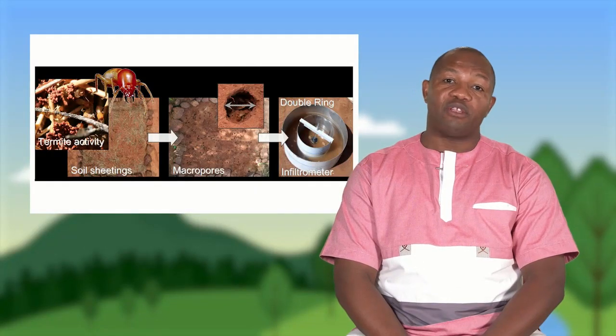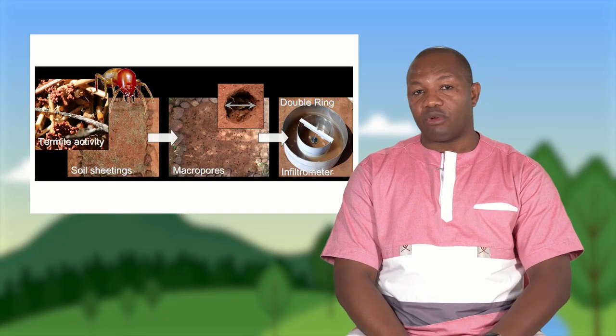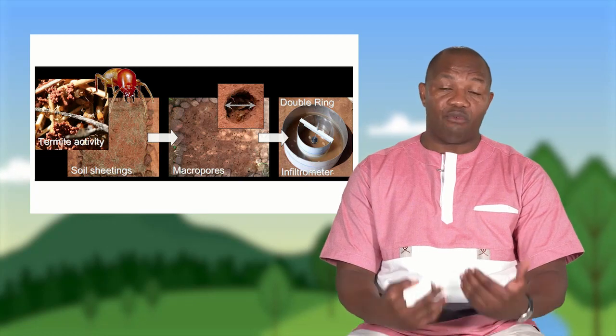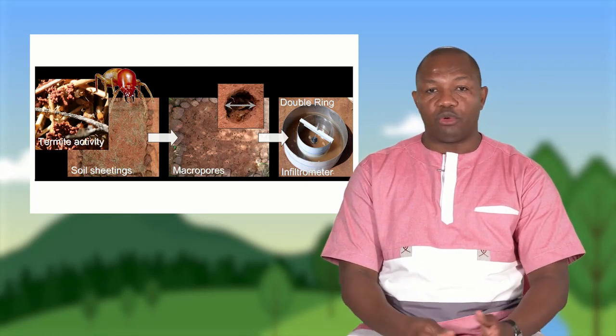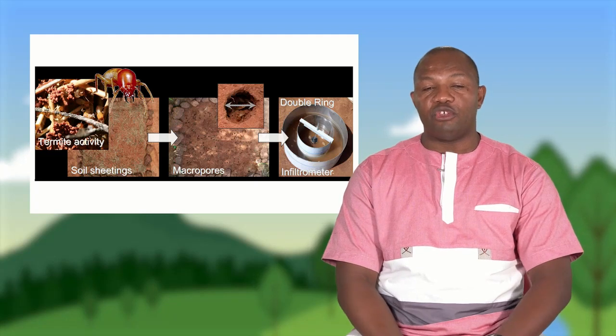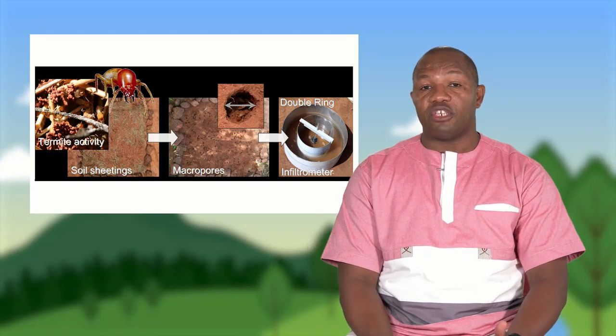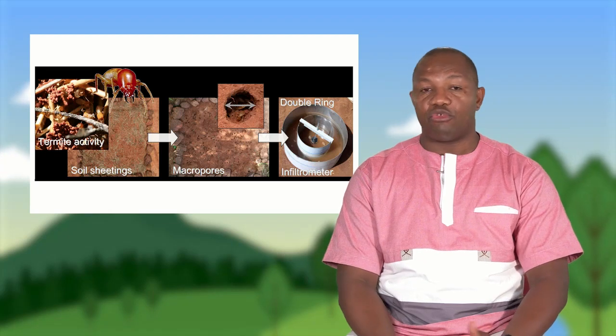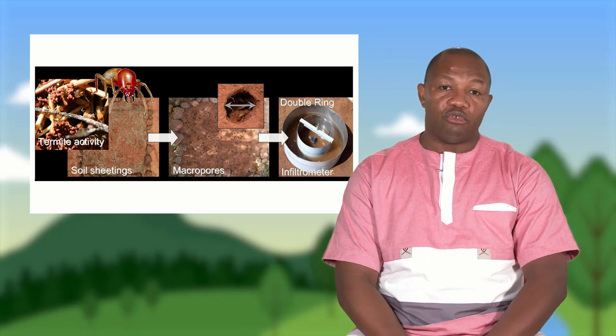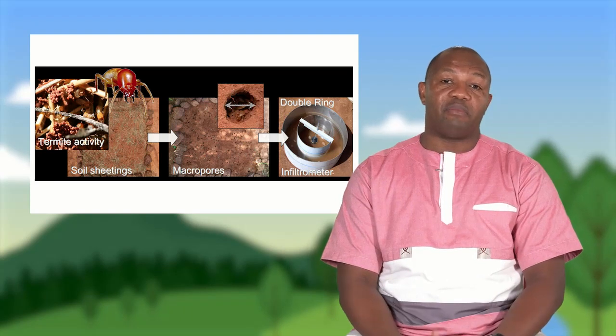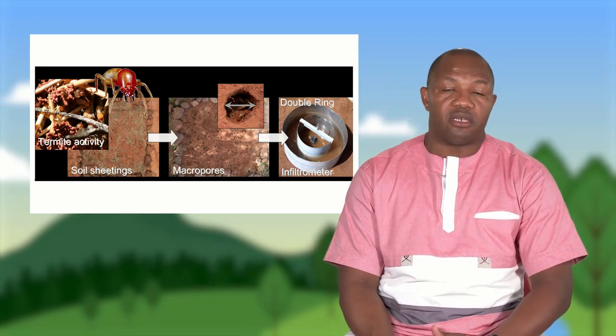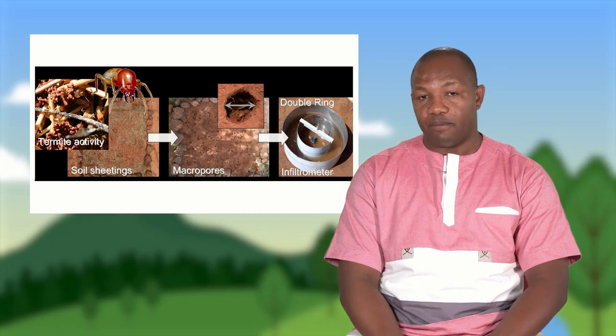Lorsque l'on met cette matière organique dans ces sols dénudés, dans des poquets, il se passe en dessous une activité de termites qui va permettre d'augmenter la macroporosité de ces sites, d'avoir une infiltration assez élevée qui va réduire le ruissellement. Les termites, du fait de leur activité biogénique, vont entraîner une décomposition de la matière organique qui permettra d'avoir une capacité en eau du sol assez importante.